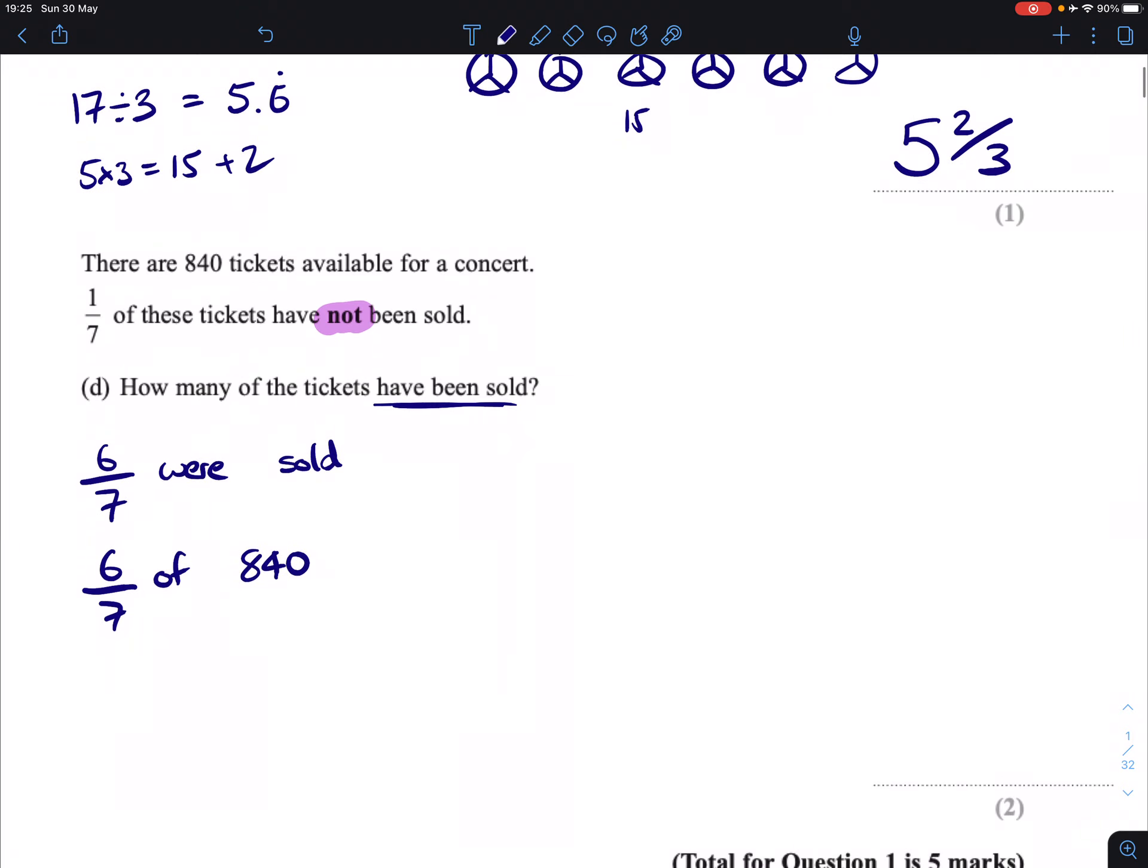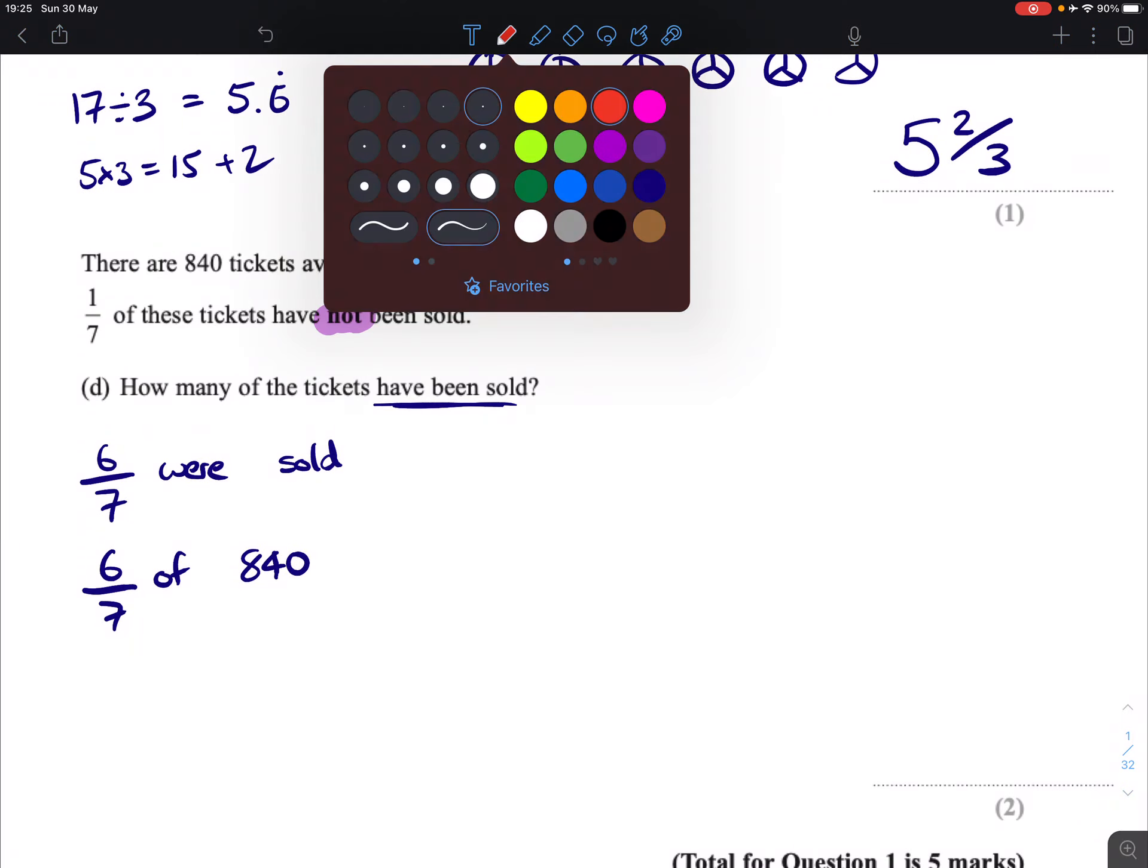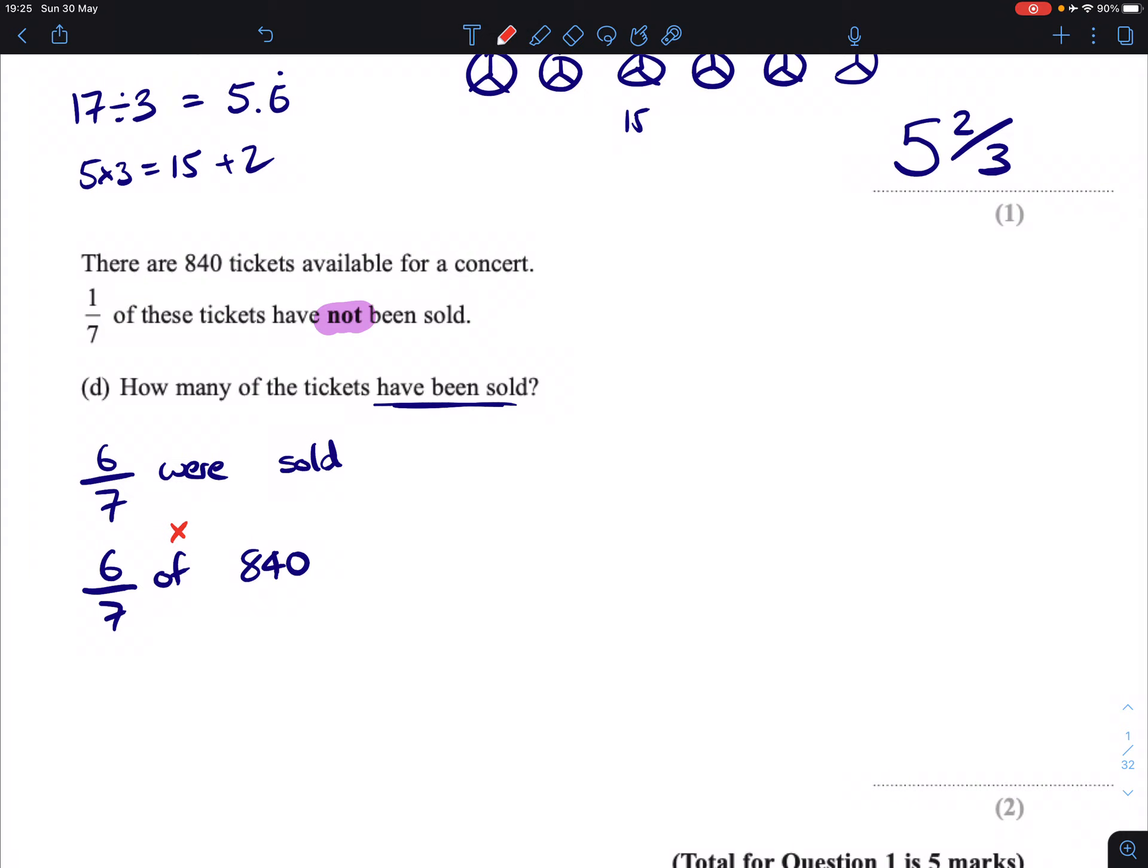Now you can just technically type this in your calculator. You can do 6 sevenths times 840. But the strategy that most people are going to use in terms of their own understanding is that you're going to do 840 divided by 7 to figure out 1 seventh. So that's 120.